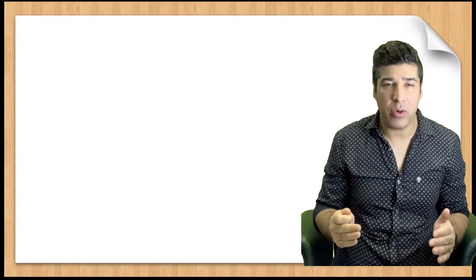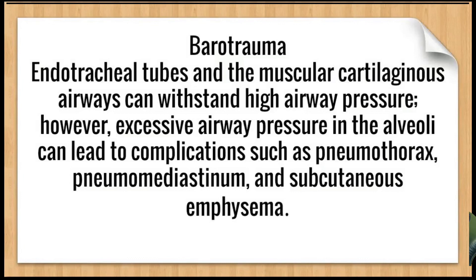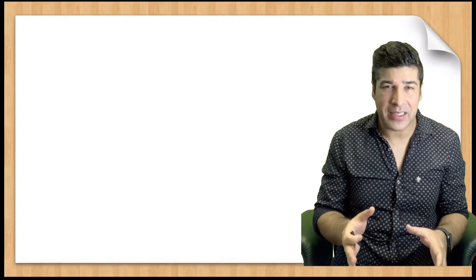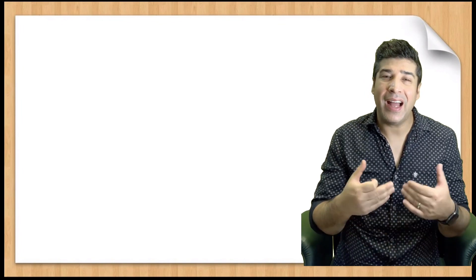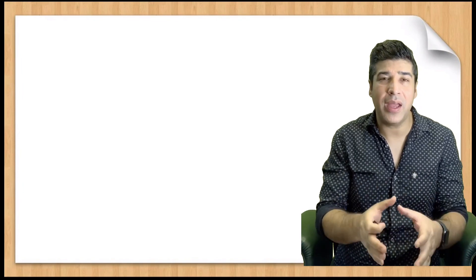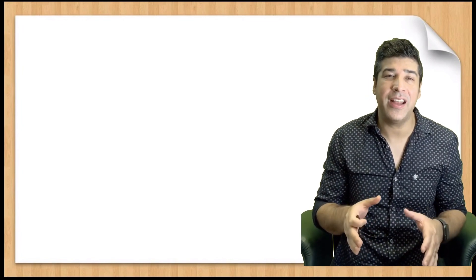The second concept is barotrauma — pressure-related injury that can happen in the lung in a patient on mechanical ventilation. Endotracheal tubes and muscular cartilaginous airways can withstand high pressures; however, excess airway pressure in the alveoli can lead to complications such as pneumothorax, pneumomediastinum, and subcutaneous emphysema.